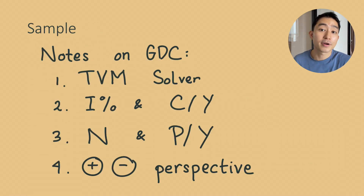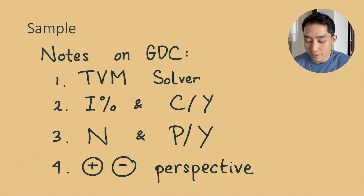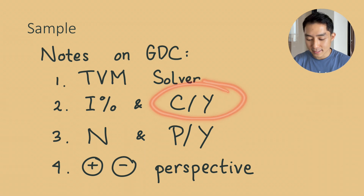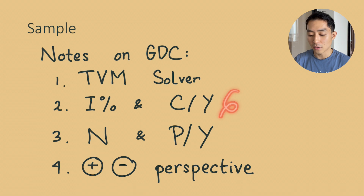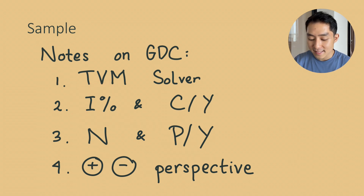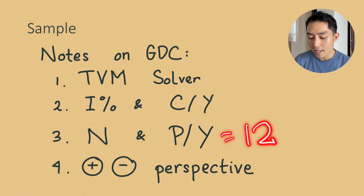For sample practice, you can watch my previous videos linked here. For using your calculator, you need the TVM solver — time value of money — technology app. Always keep the interest rate in annual and input k as the compounding period in C/Y. The compounding period equals payment per year, so if k is 12 it's also 12. For the big N, multiply the number of years by the payment period per year — so for 5 years with k equals 12, big N is 60.